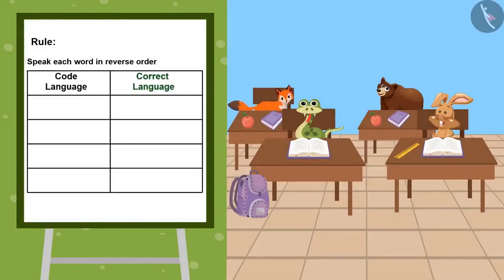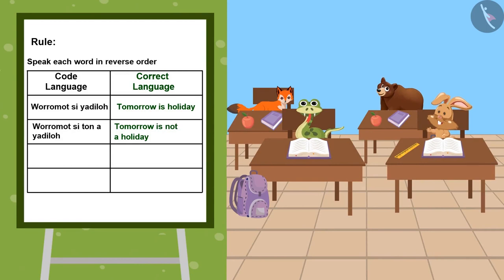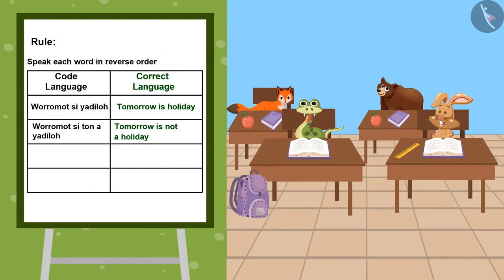Now tell me this. They are again using code language, but this is different from the first one. Bholu, there is no fixed rule for making patterns. You can use any rule to make new patterns and codes. The rule for this code is we are speaking each word in reverse order. Kids, you can pause the video and use this rule to speak or write something.